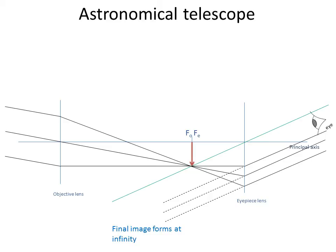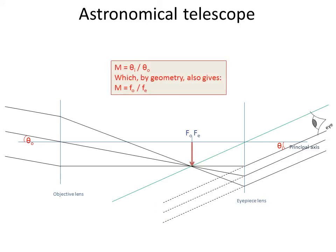Finally, the magnification of the telescope is given by comparing the angles from the eye, from the principal axis to the distant star, and here from the principal axis to the image of the distant star formed at infinity.